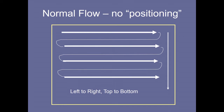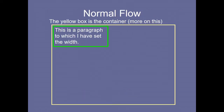The normal way is called the normal flow, or no positioning. The top-left of the page coordinate is (0, 0). You can see arrow marks indicating left-to-right and top-to-bottom directions. This is called the normal flow: top-left corner, left to right, and top to bottom.